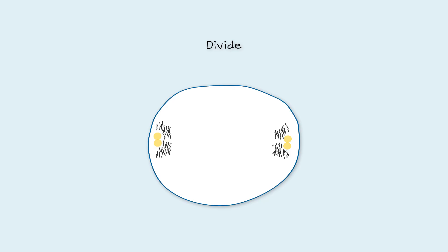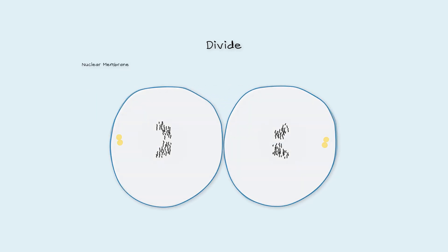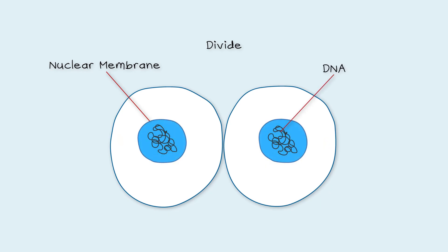The cell itself also has become bigger and the cell wall starts to pinch in the middle until there are two identical separate cells. The nuclear membrane reforms and the DNA returns to its relaxed state.